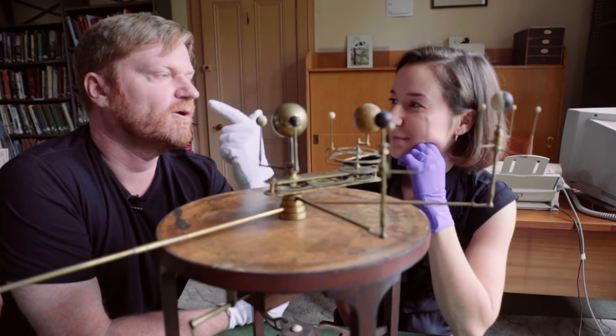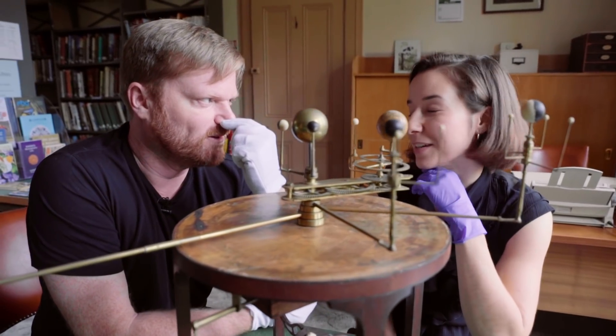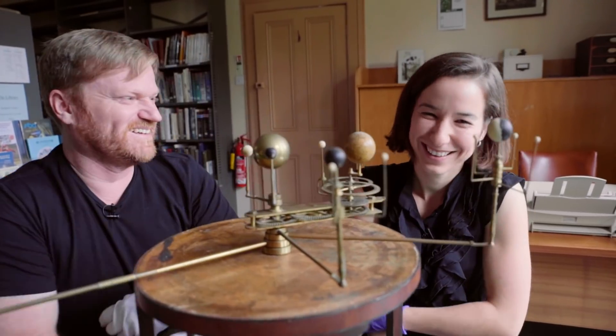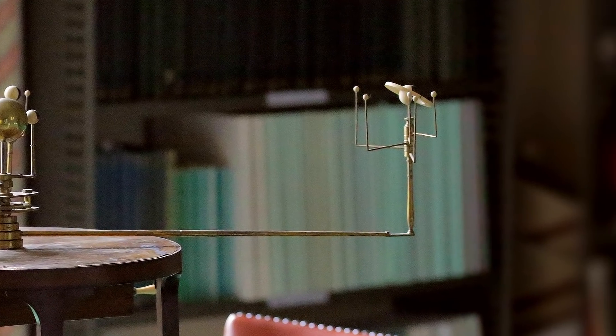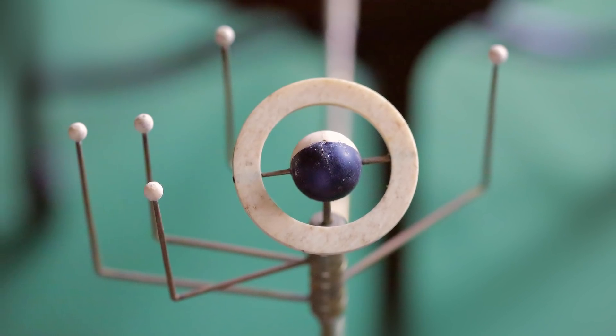Ganymede, Io, Europa and Callisto, I think. I'm nodding, I don't know. I could be wrong. You're just thinking, can I conserve them? And then here we have obviously Saturn with its ring system. And Saturn has been given five moons.